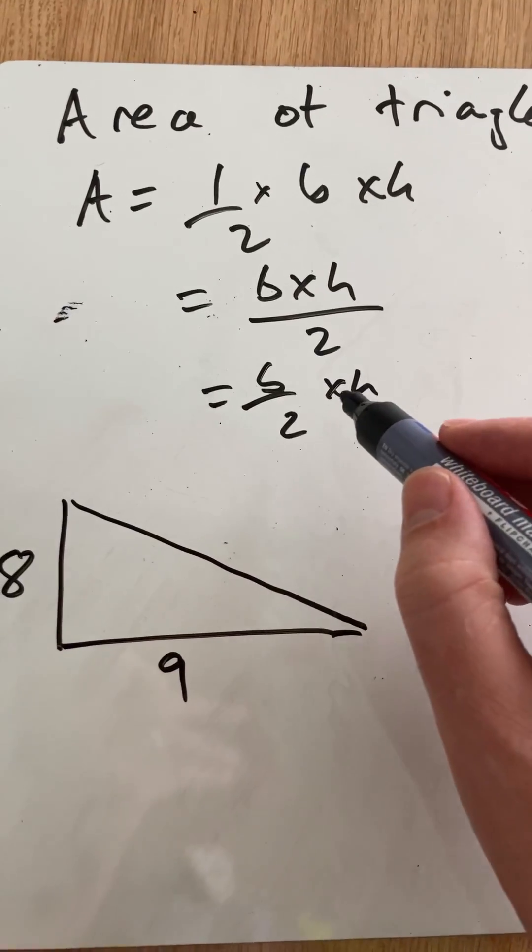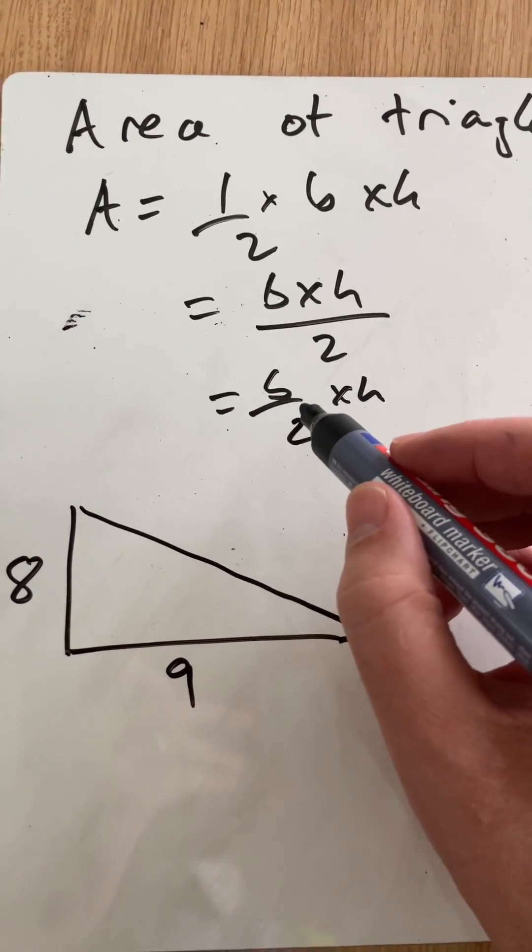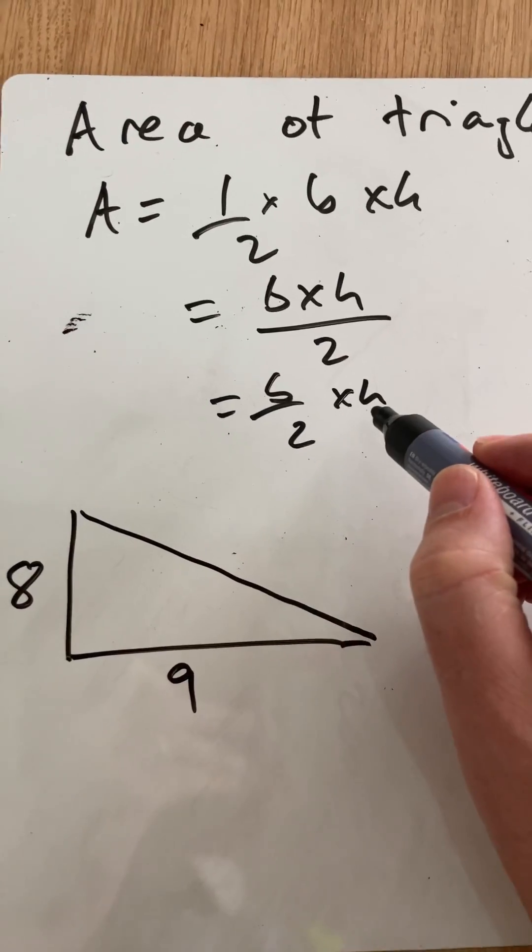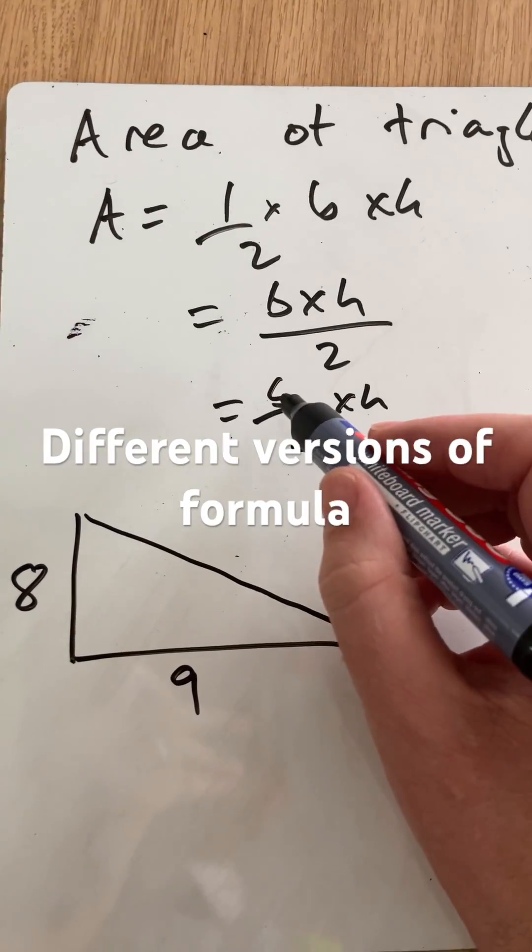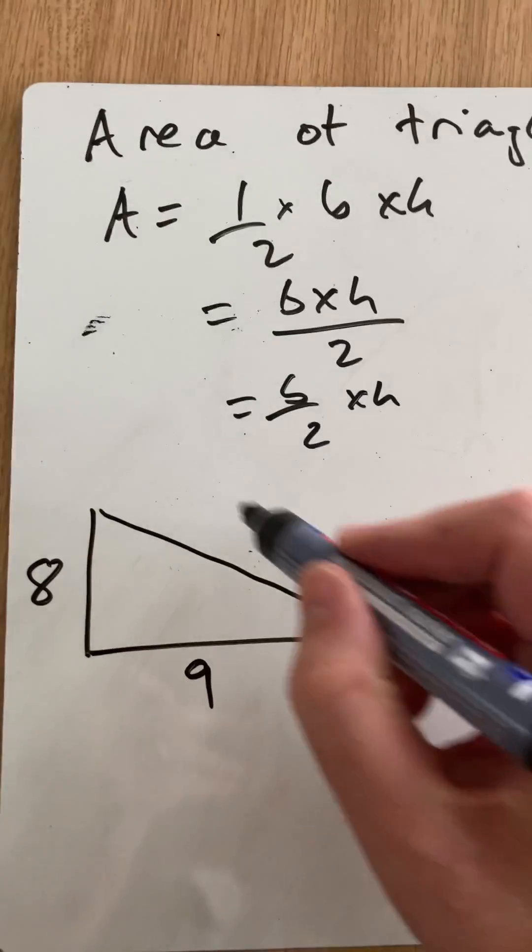But one thing that I find easier, depending on the numbers, is that you actually divide one of those by 2 and then times by the height. Say you divide the base by 2 and then times the height. Let me show you the example.